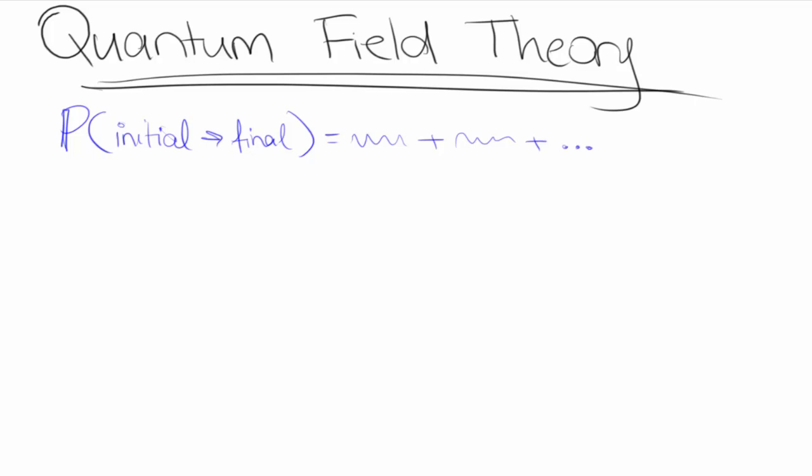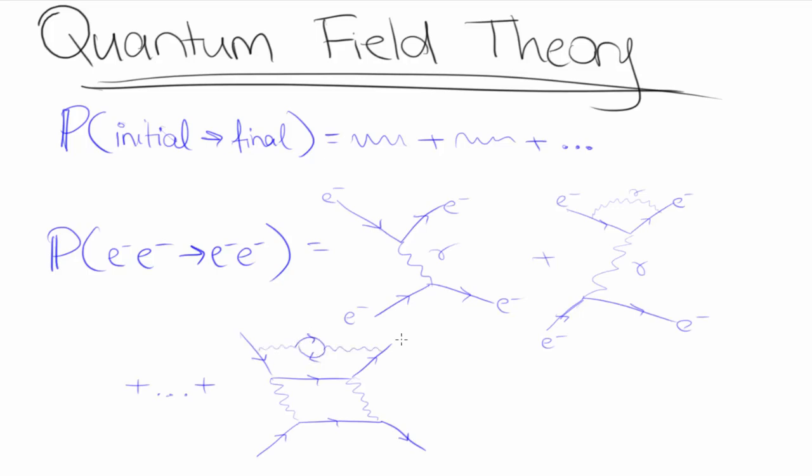For example, if I were to calculate the probability of two electrons scattering from each other, I can draw a Feynman diagram for each mathematical term that shows up. Here is what some of these terms might look like. In fact, for every valid Feynman diagram we can draw, there will be a corresponding mathematical term.